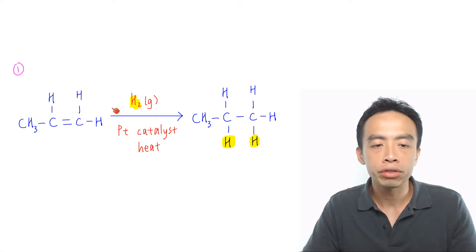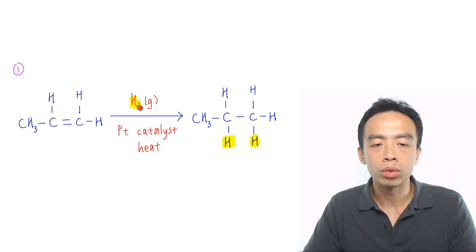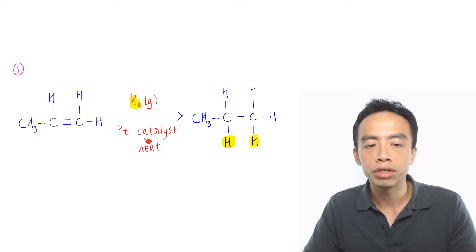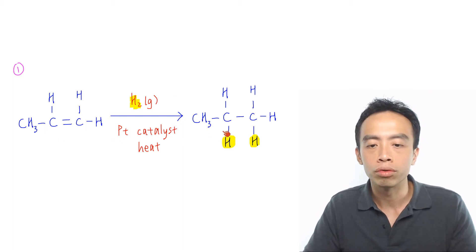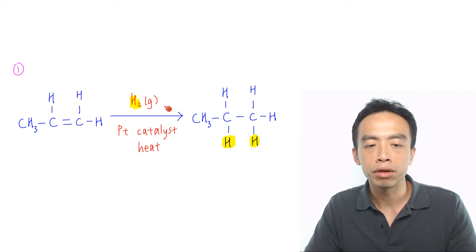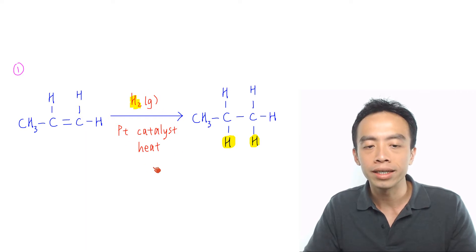The first must-know reaction is the hydrogenation of alkene to alkane. The reagents and conditions will be H2 gas with platinum catalyst and heat.